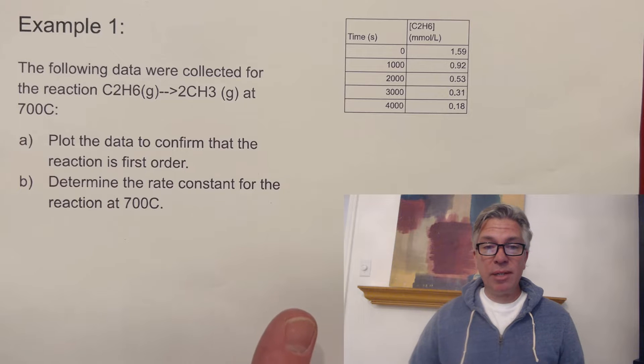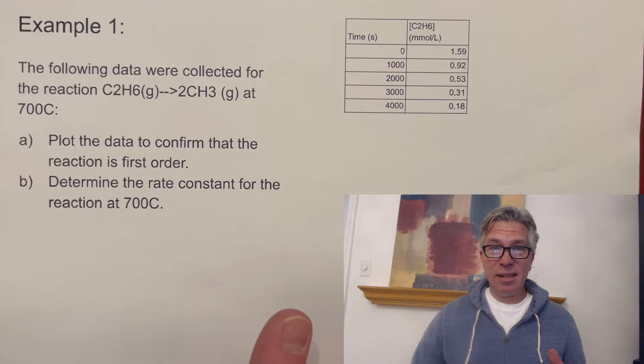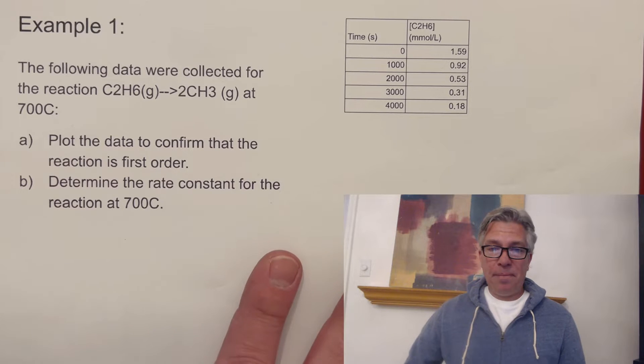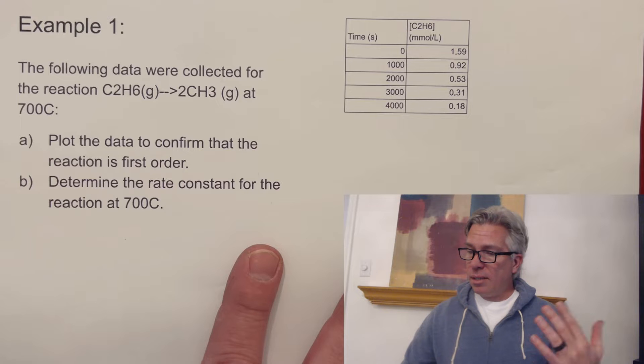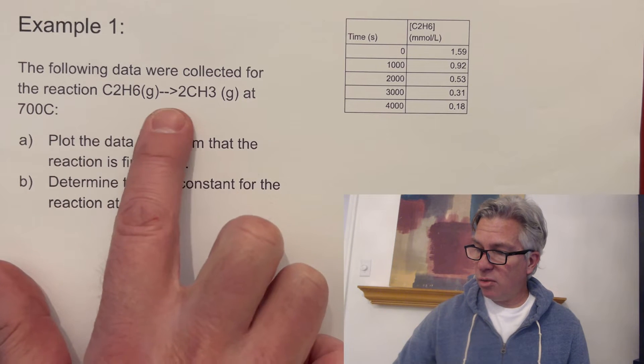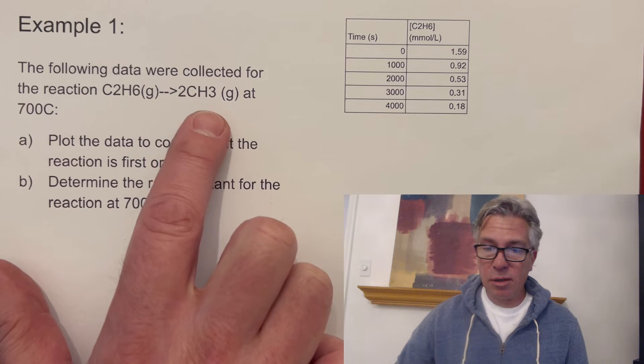So I'm going to show you three different types of problems that you might see. They're kind of worded slightly different each time, but you'll get an example of each. So let's start with this one. It says here, the following data were collected for the reaction C2H6 makes two CH3s. And those should be little subscripts.